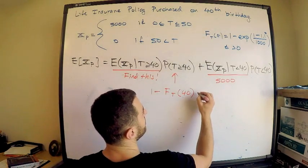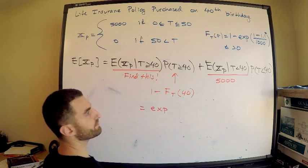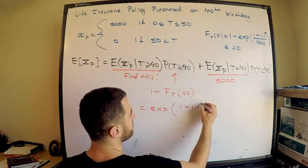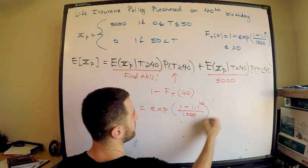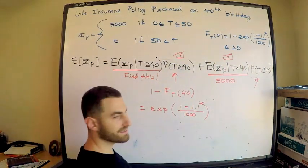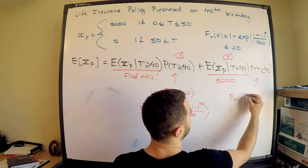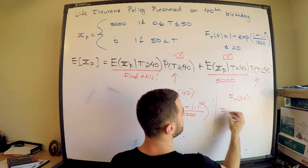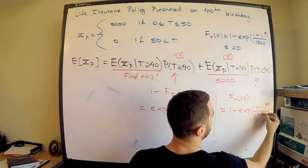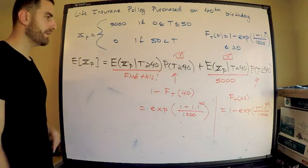All right, so this is equal to, this is equal to E, well, do I need to write it? Yeah, I'll just write it. This is equal to EXP, the exponential, I wrote it EXP, get used to that, if the argument's annoying, which it is, we write it as EXP. So, 1 minus 1.1 to the 40, divided by 1,000. Okay, so that's that value, that takes care of that. So this is check, we're good. This is check, we're good. How about this one? Well, this is exactly just the CDF. This is exactly the CDF, so this is FT of 40, which is equal to 1 minus EXP raised to the 1 minus 1.1 to the 40 over 1,000. And I'm not going to approximate those, whatever. We can, I guess, maybe in a minute. So we have this as well.